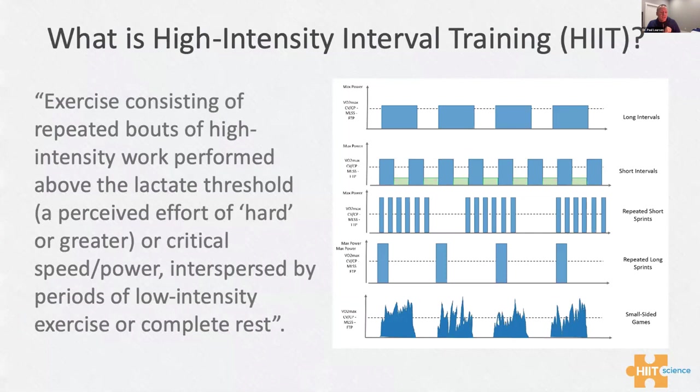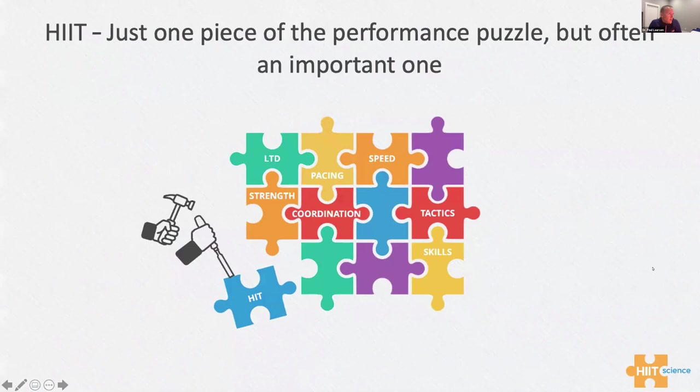There are loads of ways to skin the cat when it comes to training, but in general those are the five formats or weapons that we have. We can have long intervals, short intervals, repeated short sprints, repeated long sprints, and we can use these in the team sport context as small-sided games. These all form very useful tools that we can bring into practice.